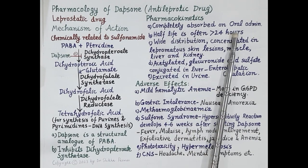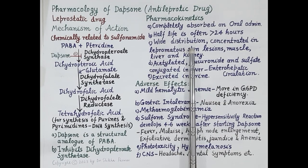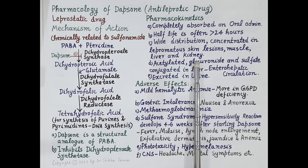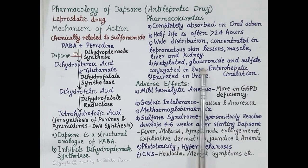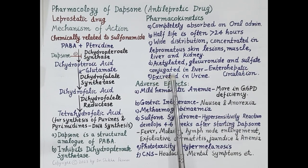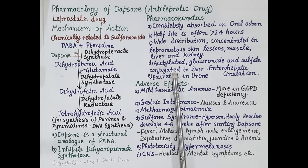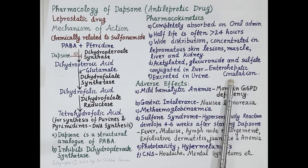Some important pharmacokinetic features of dapsone: dapsone is completely absorbed on oral administration, and its half-life is variable but often more than 24 hours. Dapsone is widely distributed in the body and concentrated in lepromatous skin lesions, muscle, liver, and kidneys. Dapsone is metabolized in the liver by acetylation and conjugation to produce glucuronide and sulfate conjugates. These metabolites are passed into the bile, reach the intestine, and instead of being excreted they are reabsorbed into portal circulation and return to the liver — so dapsone accumulates in the body as it undergoes enterohepatic circulation. Dapsone is ultimately excreted in the urine.